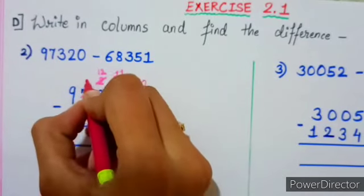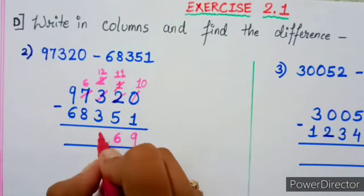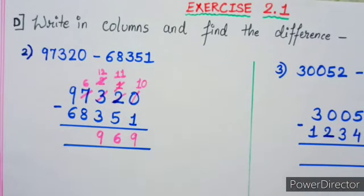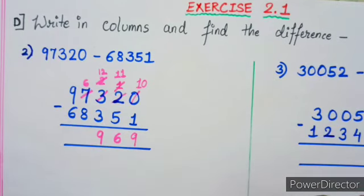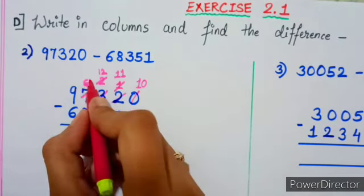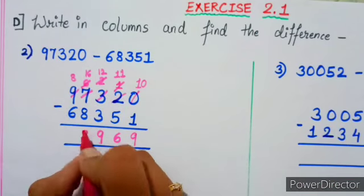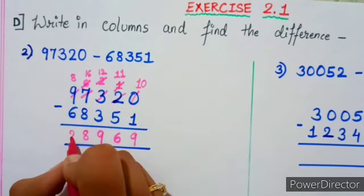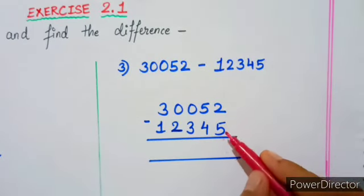Again 2 is less than 3, so this will become 12 and this will become 6. Now 12 minus 3 is 9. 6 minus 8, you cannot do it right, so again 6 will become 16 and this will become 8. Now 16 minus 8 will be 8, and 8 minus 6 will be 2.